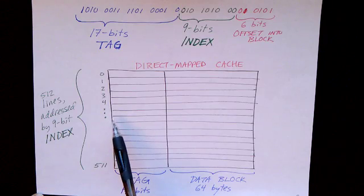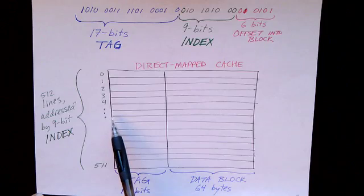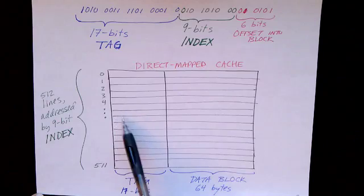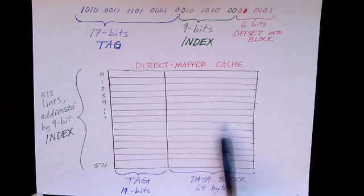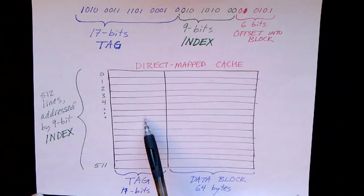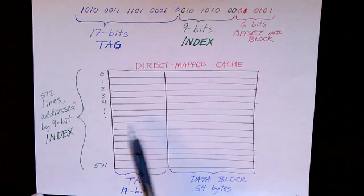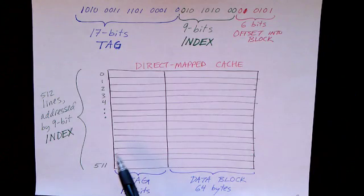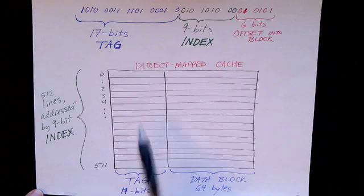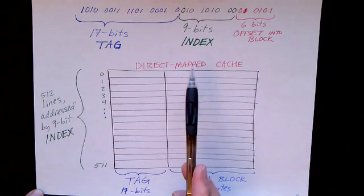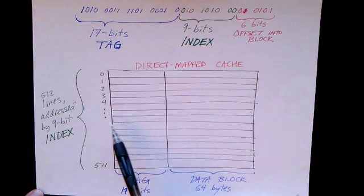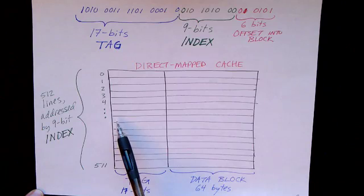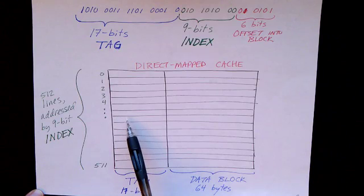This is just like a normal DRAM, except instead of having only one byte for each address, you've got a bunch of bits. You've got 64 bytes here and 17 additional bits here. But other than that, it's a typical sort of DRAM style memory. So the 9-bit index is used to select one particular line, and then that line is retrieved.